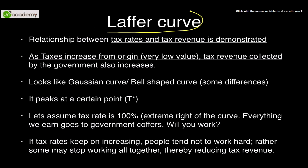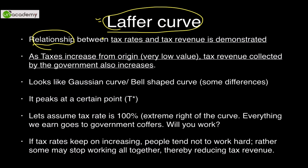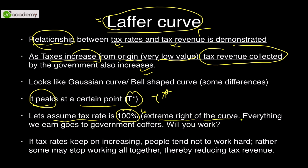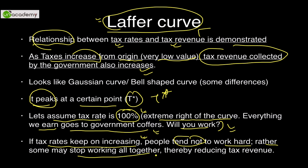The Laffer Curve demonstrates the relationship between tax rates and tax revenue collected by the government. As taxes increase from very low values, tax revenue also increases up to a certain peak point called T-star. If the tax rate is increased to 100 percent, everything earned goes to the government, and people will stop working — so tax revenue actually falls. As tax rates keep increasing beyond T-star, people are not incentivized enough to work, reducing tax revenue. This is why the recommended tax rate is kept between 20 to 50 percent, as followed across the world.